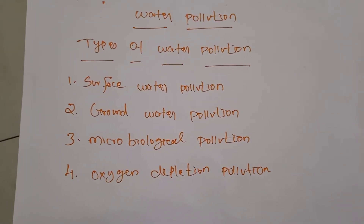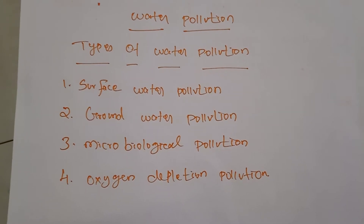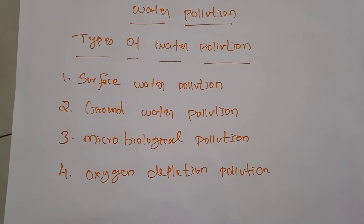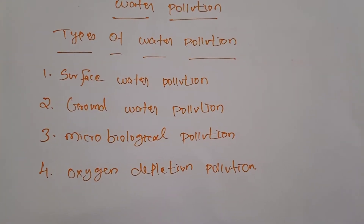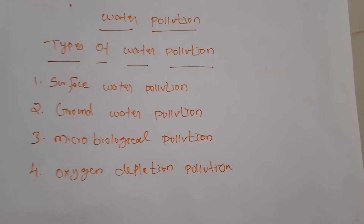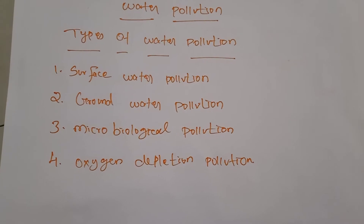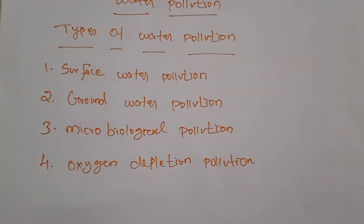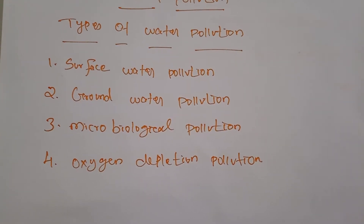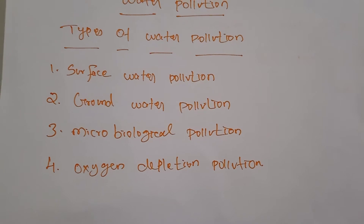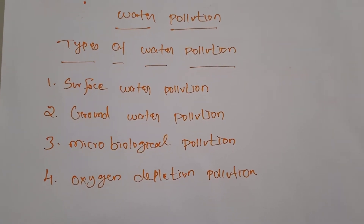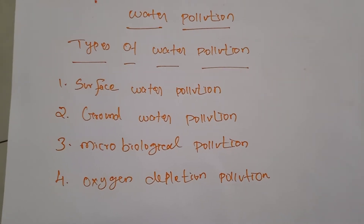The introduction of substances or energy into the marine environment results in deterioration effects on living resources and hazards to human health, hindering marine activities. Whenever water is polluted by human activities, it is considered water pollution. The types of water pollution include surface water pollution, groundwater pollution, microbiological pollution, and oxygen depletion pollution.